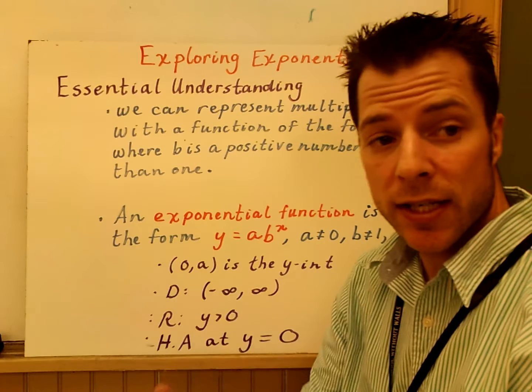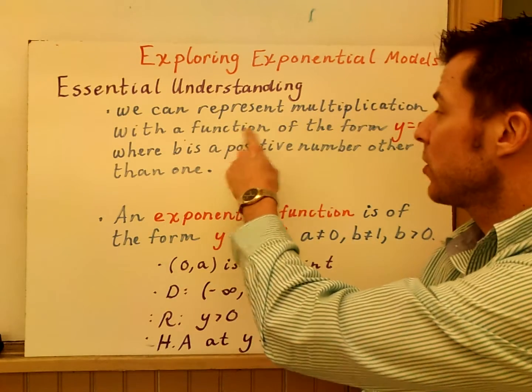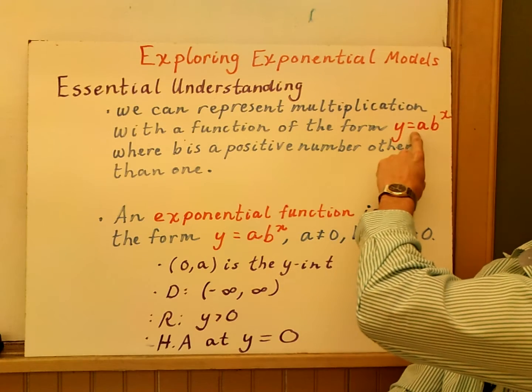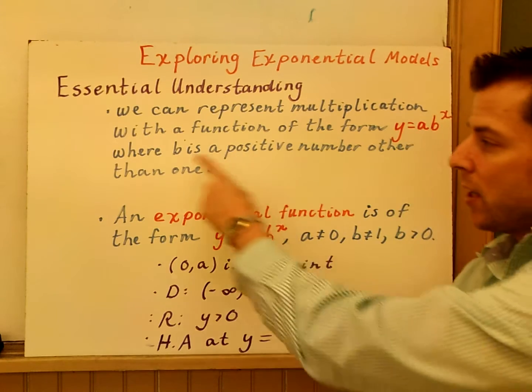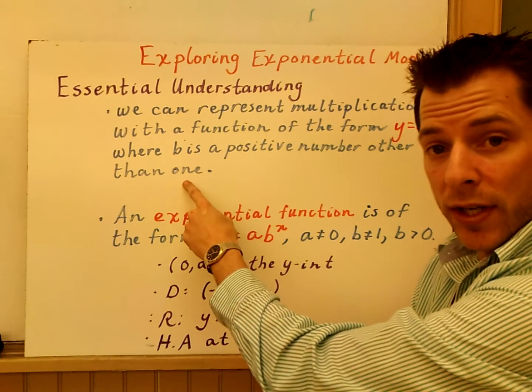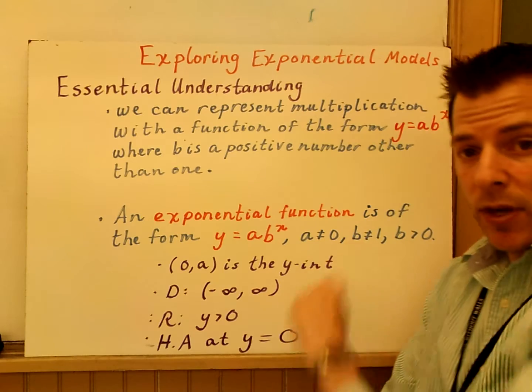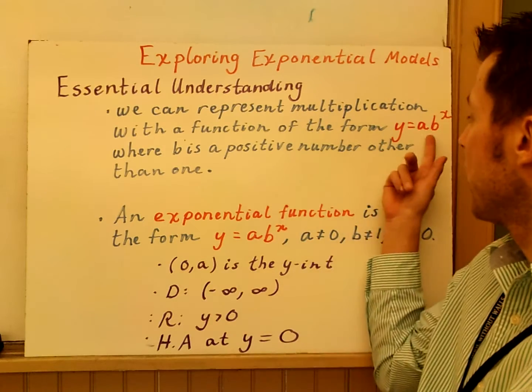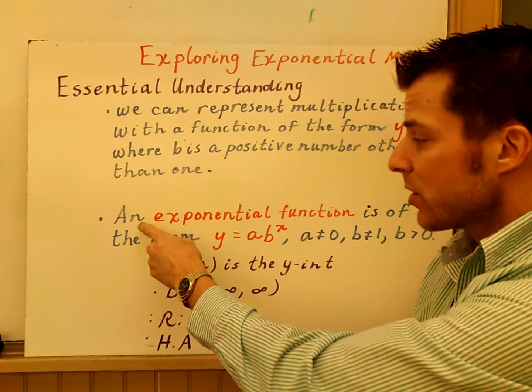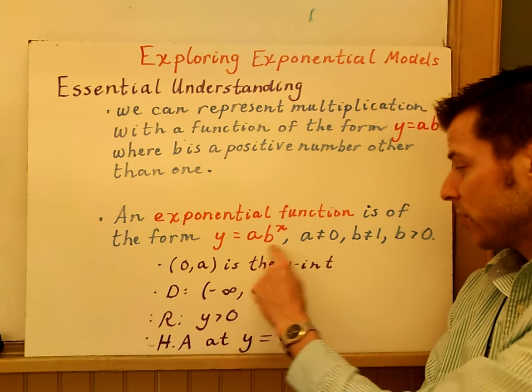The essential understanding today is that we can actually represent repeated multiplication with a function of the form y equals ab to the x, where b is a positive number other than 1. We'll make some stipulations. So we can represent repeated multiplication using this equation. And it's actually called an exponential function is of this form.